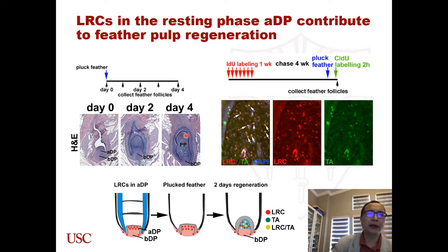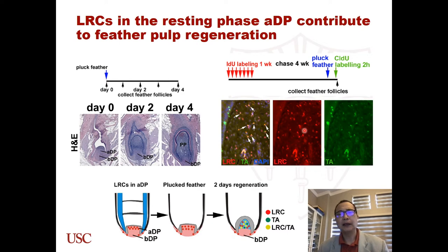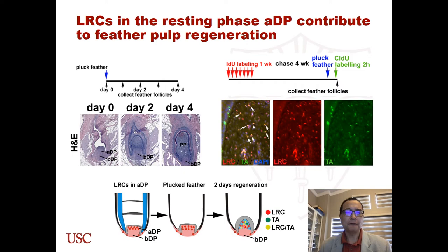In our last experiment, we tried to determine whether the apical dermal-papilla-distributed LRCs contribute to new pulp formation. We labeled the LRCs with IdU — shown here in red — and labeled the transit-amplifying cells with CldU — shown in green. Our results show that in the two-day regeneration, 50% of LRC cells are also in proliferation, shown as yellow. This data suggests that more than half of the LRCs contribute to new pulp regeneration.